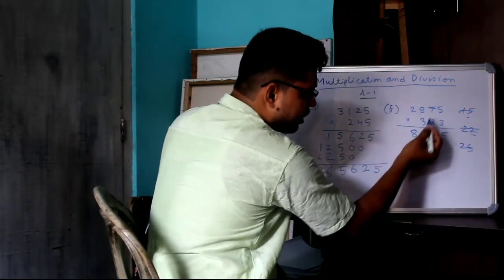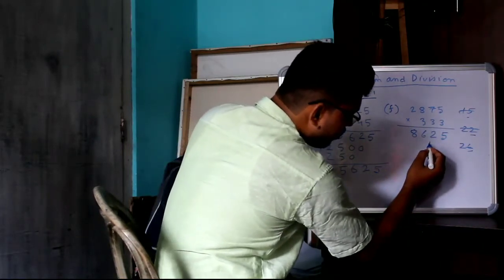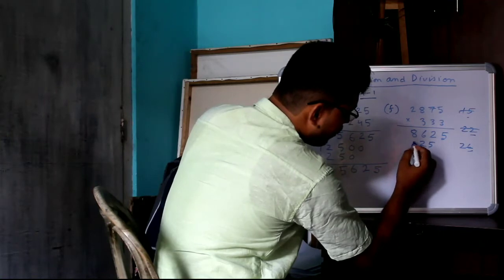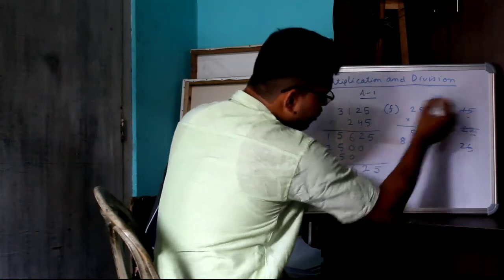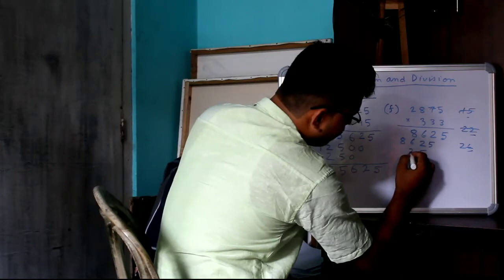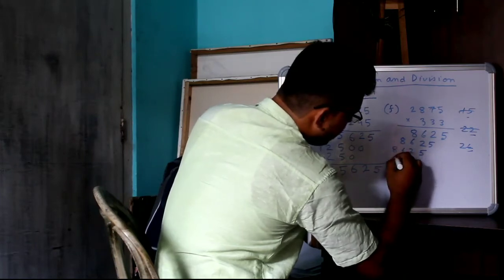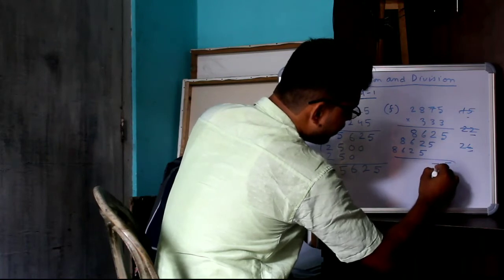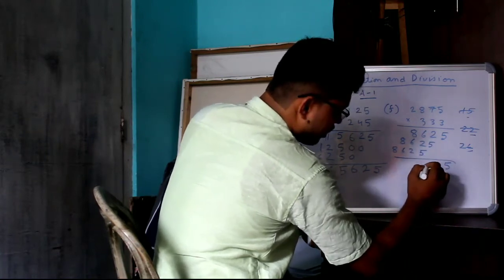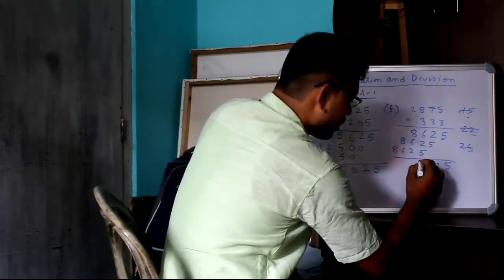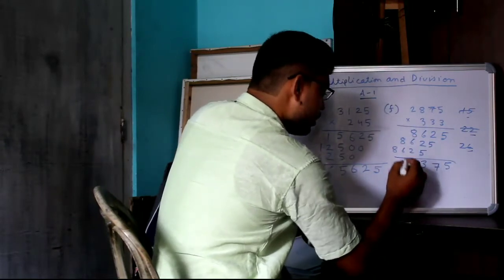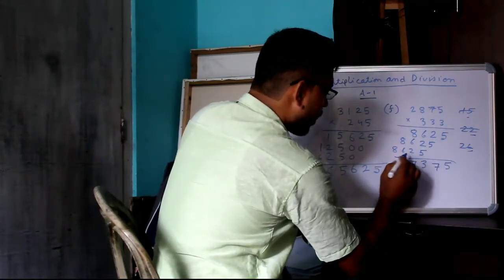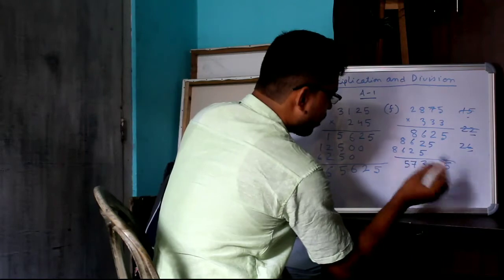So, 3 x there, this number will come, same process. Just write from here: 3, 5, 2, 6, 8. Again 3, so 5, 2, 6, 8. Write the number. Addition: 5, 7. 5 plus 2, 7. 7 plus 6, 13. 3 is here, 1 is gone. 17, 7 here, 1 gone. 15, 5 here, 1 gone. 9.